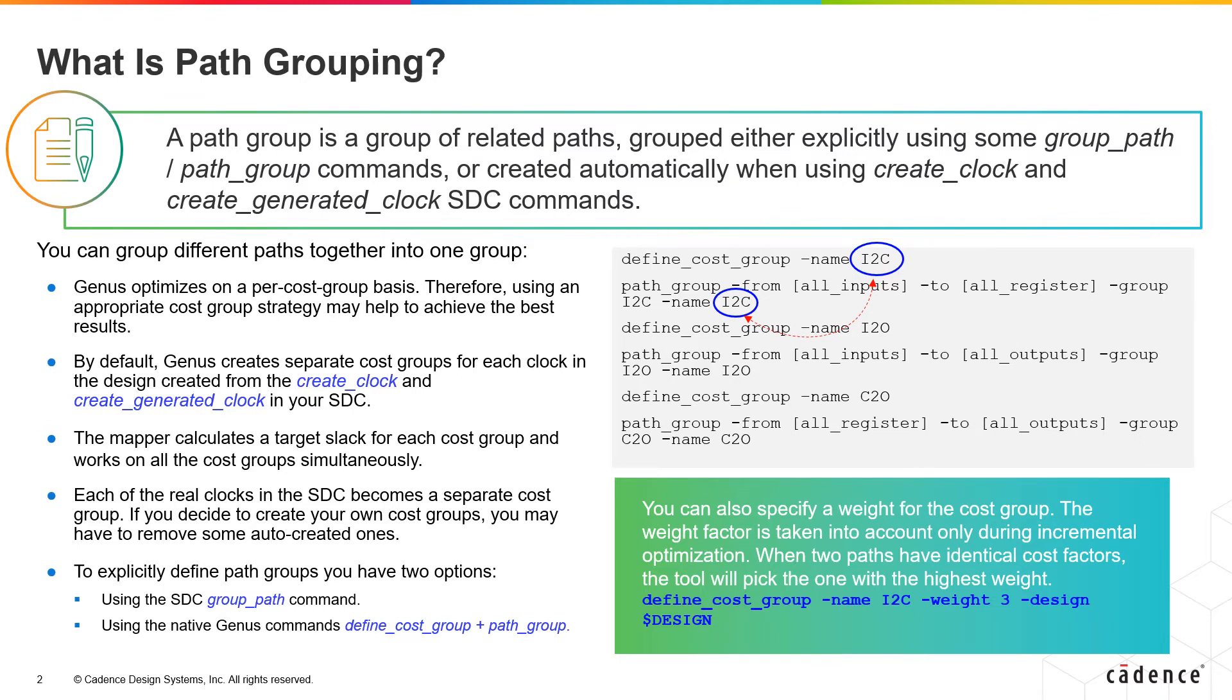We can also define path grouping in SDC using group_path command. As well as, we can specify the weight of the cost group which is taken into account during incremental optimization. So while defining the cost group, we can specify the name of the cost group and specify the weight for the particular design.